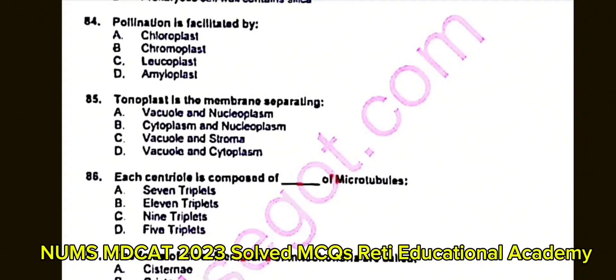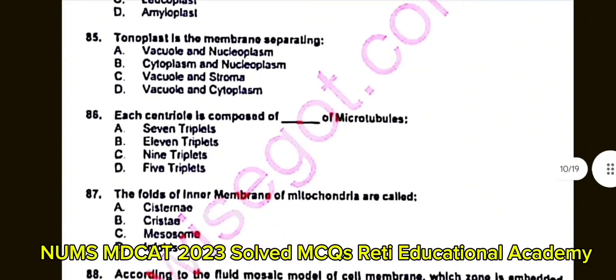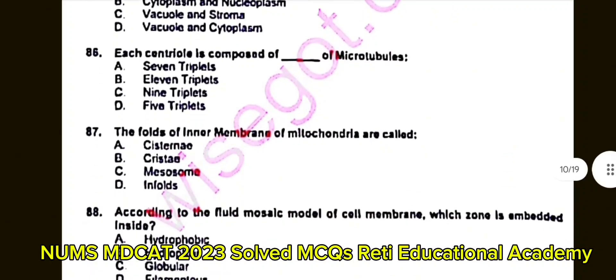Question number 86: Each centriole is composed of dash microtubules. A. 7. B. 11. C. 9 triplets. D. 5. The correct answer is C: 9 triplets.